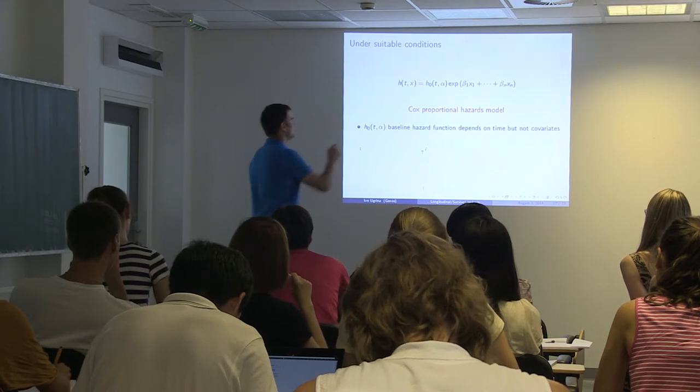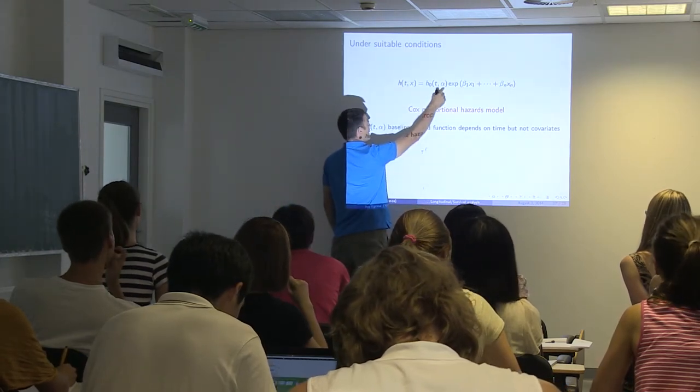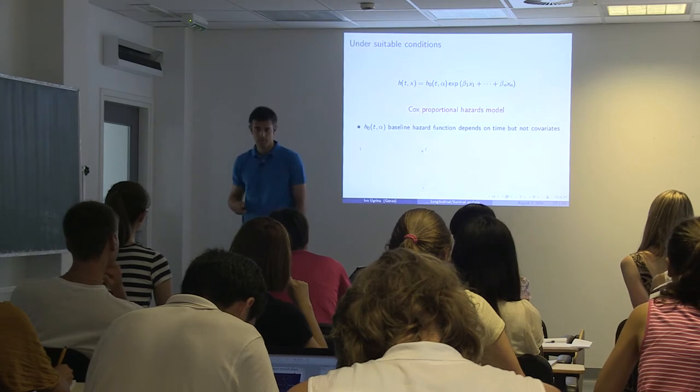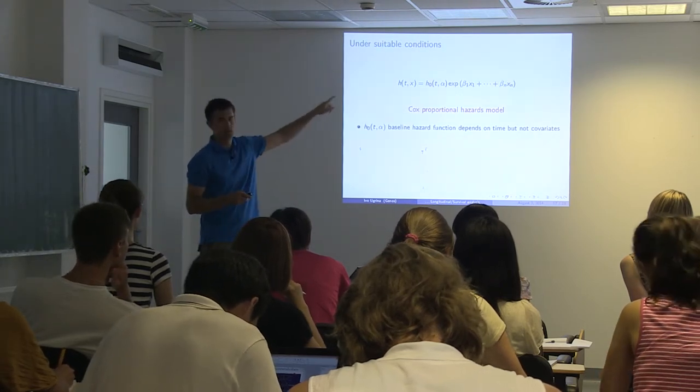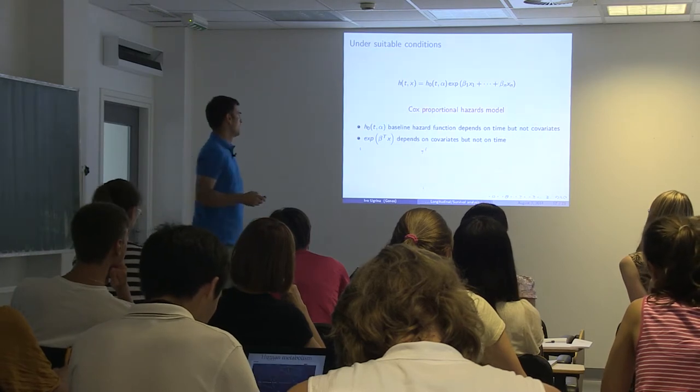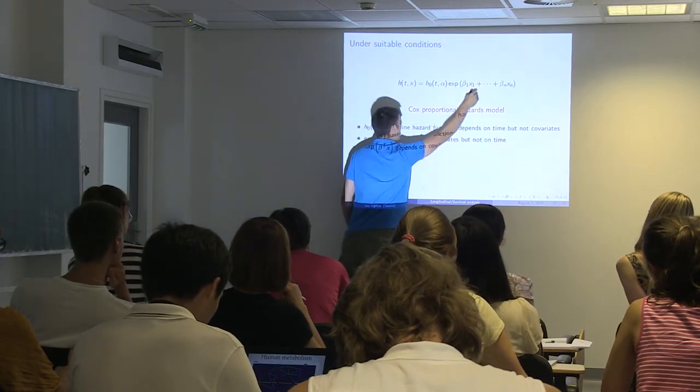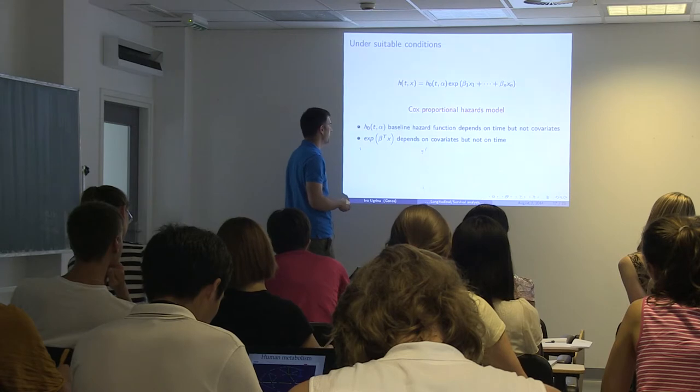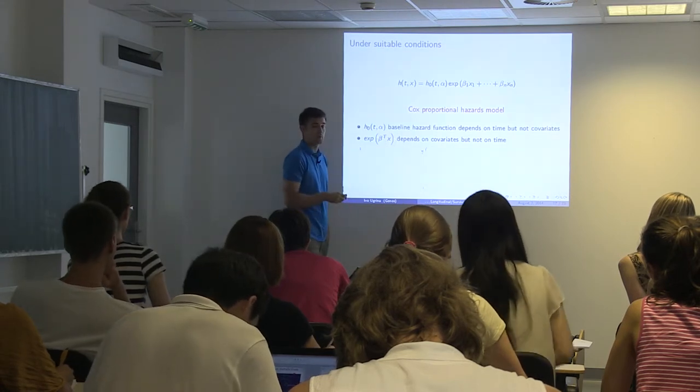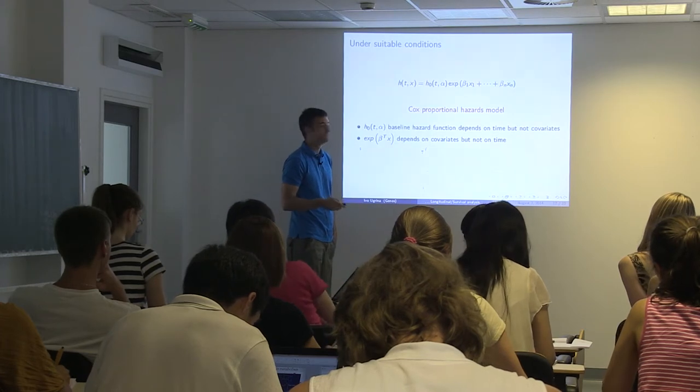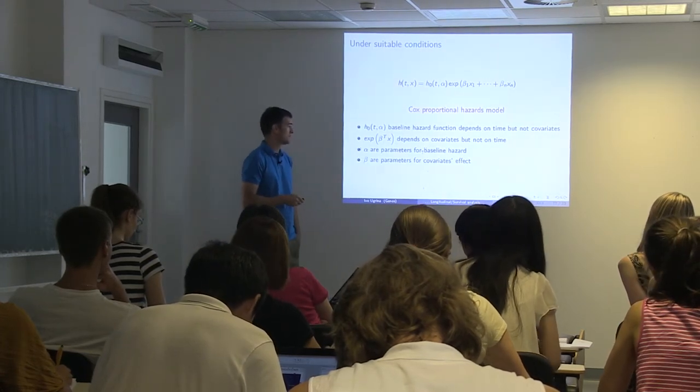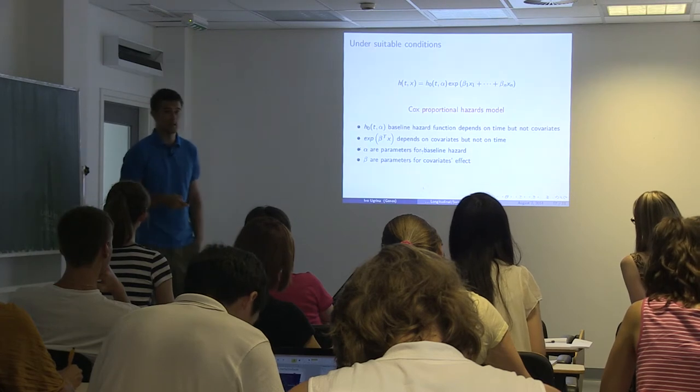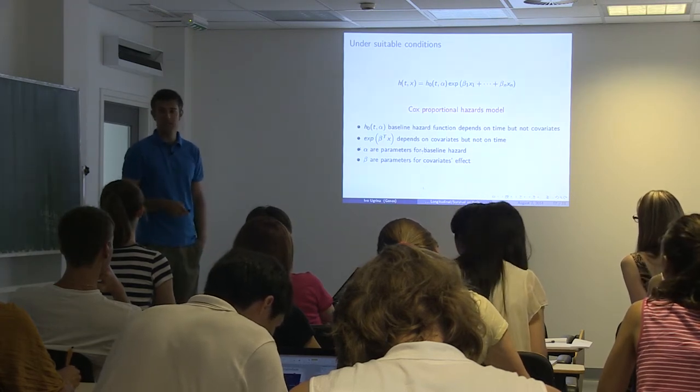This part - the t is time, alpha is some unknown parameter. So this is baseline hazard function depends on time, but not covariates. As you can see, there is no t in the other part. This is just a mathematical notation for this thing here where x is a vector containing x1 to xn and beta is a vector containing beta 1 to beta n. So this depends on covariates, but not on time. There is no t part there. Alphas are parameters for baseline hazard and betas are parameters for covariates effects. So as you look at it like this, nobody would say, oh, this is the greatest thing ever. Right. It's just another mathematical notation, another formula.